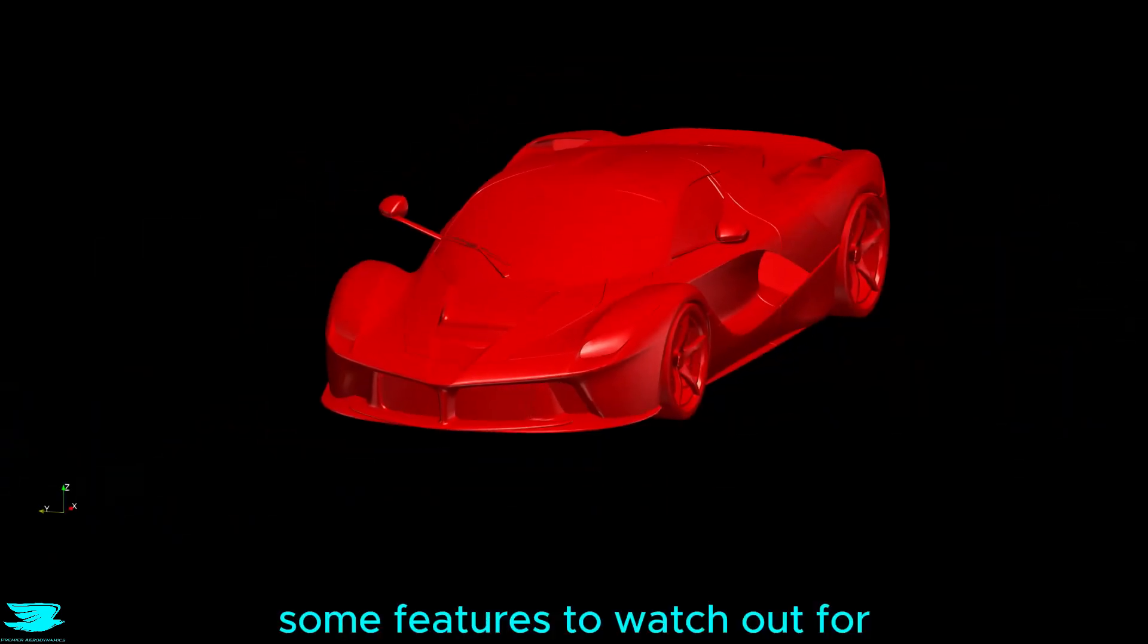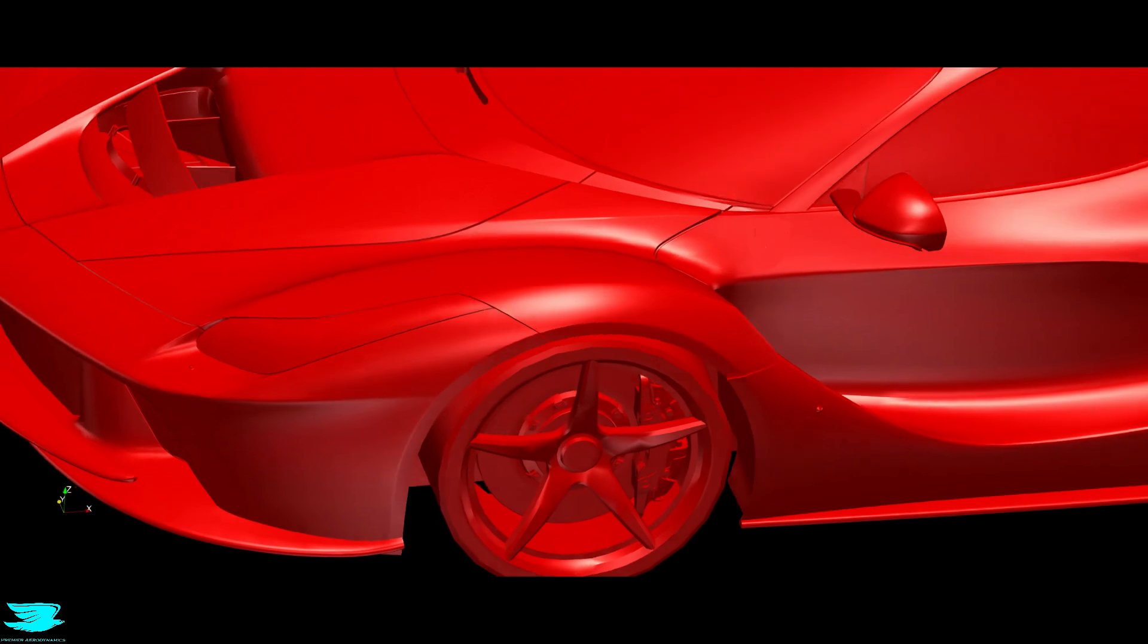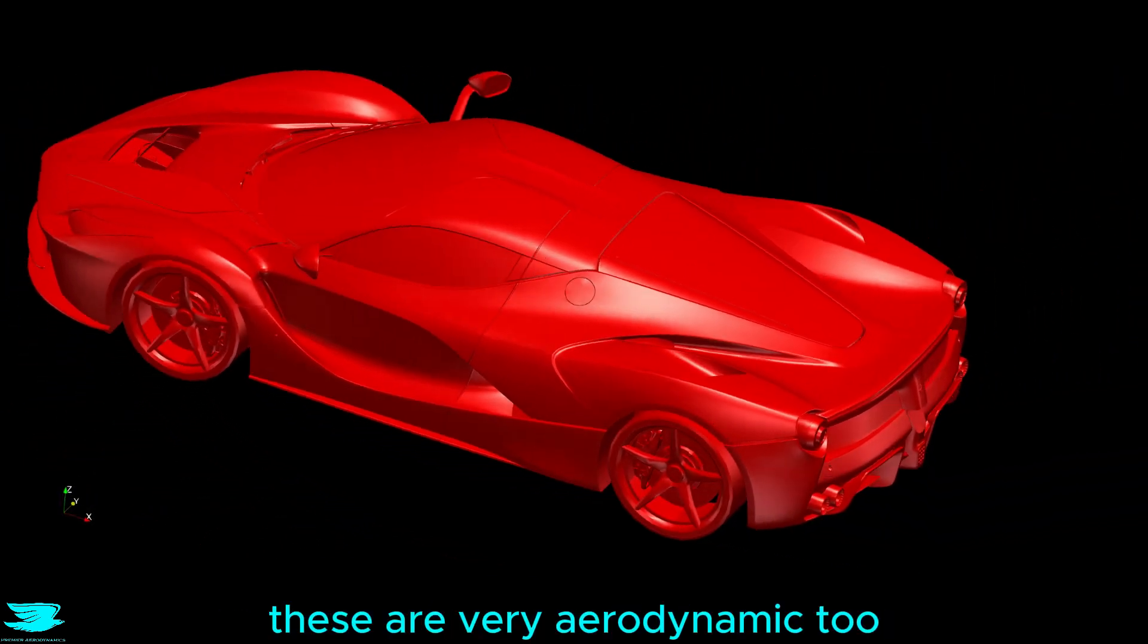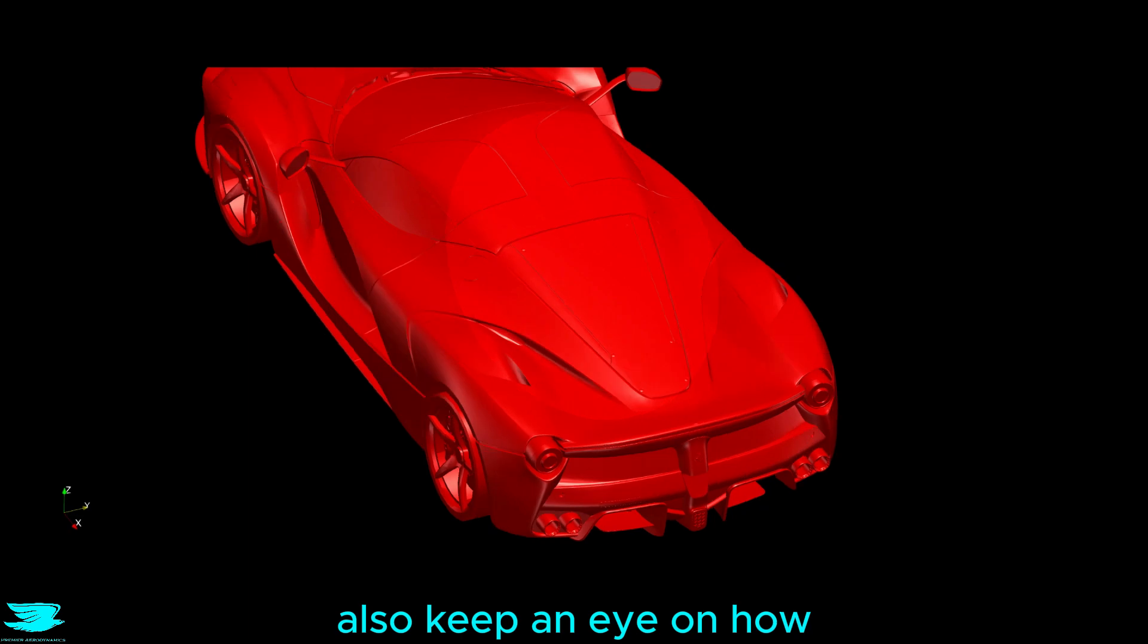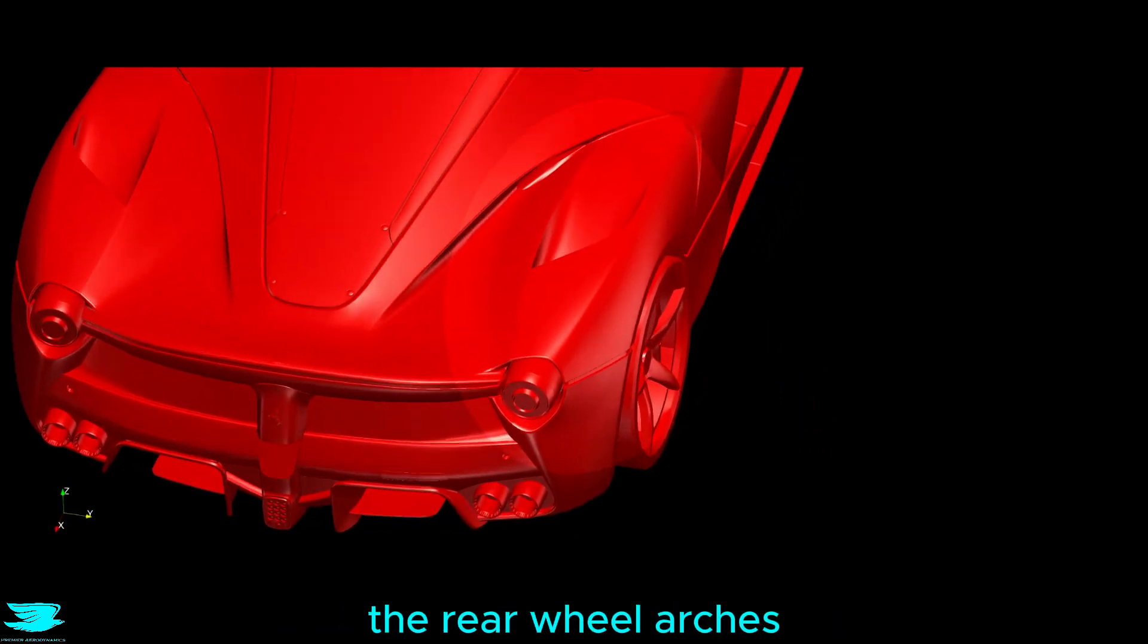Some features to watch out for are the front setup, including the splitter, then the front wheel arches, which are a work of art, but as we'll see, unlike most exaggerated front arches, these are very aerodynamic too. Also, keep an eye on how the rear taper of the roof guides the flow and how the air travels around the rear wheel arches as well.